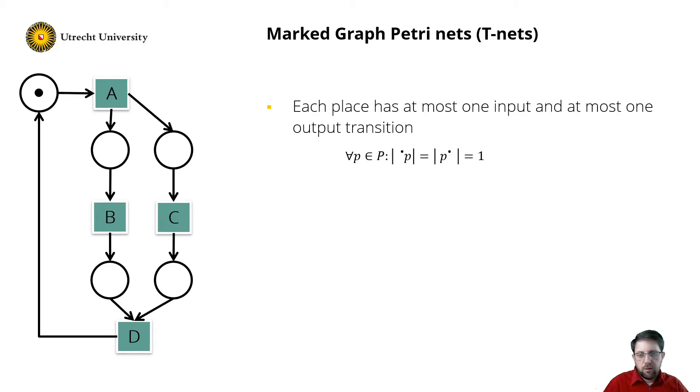Also marked graphs have some nice properties, though a bit more difficult. So for example, if all circuits are marked, all transitions can always eventually fire. So what do we mean with this? So look on the net on the left. Here we have two circuits, namely from A to B to D back to the initial, and from A to C to D back to the initial. And those two are the only circuits in this net. And as both have a marked place, namely this place in both circuits, we know that transitions A, B, C and D can always eventually fire. So they should all occur in the reachability graph.